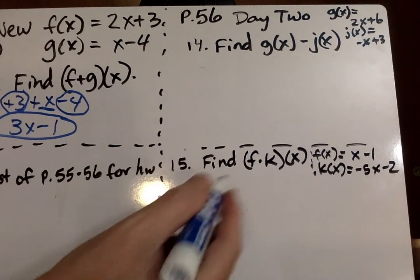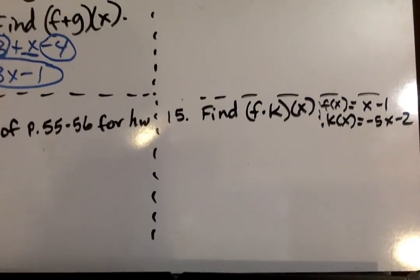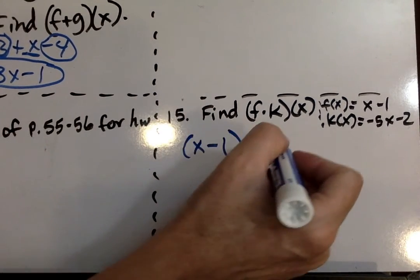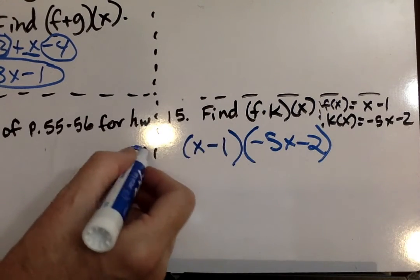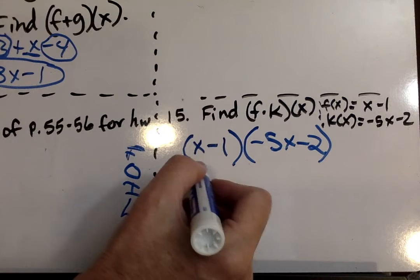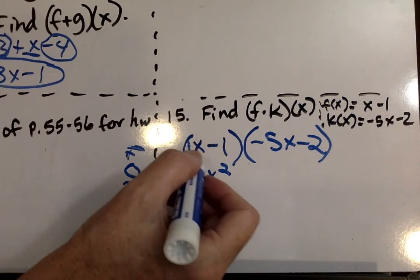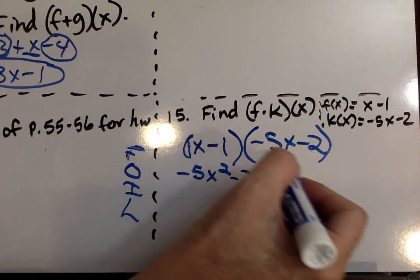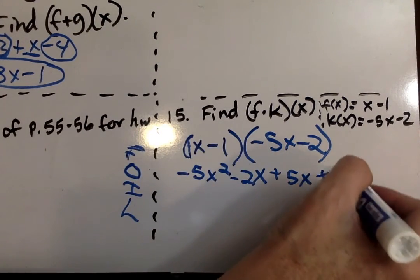I'm going to go ahead and skip that one for now. I will go ahead and do one more multiplication one so that you have practice with foil. So we have an x minus 1 and a negative 5x minus 2. And again, I'm using foil. First, outside, inside, last 2. x times negative 5x, negative 5x squared. Remember when nothing is there, you can pretend there's a 1 there. Then outside, 1x times negative 2 is negative 2x. Inside, negative 1 times negative 5x is plus 5x. And negative 1 times negative 2 is plus 2.